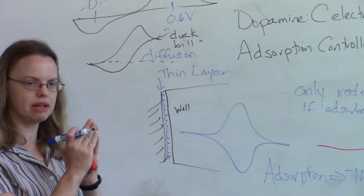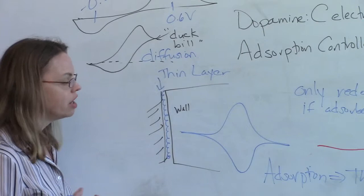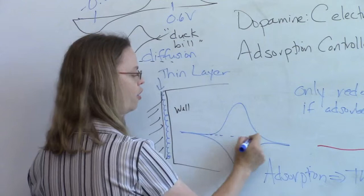That is what thin layer cell tells you you should get. It turns out delta E peak should be zero, because the peaks were slightly shifted before because of diffusion. If you take out diffusion, delta E peak should be zero.